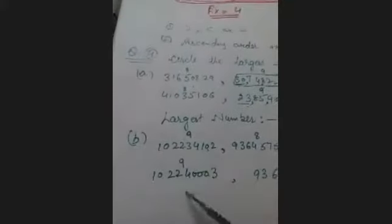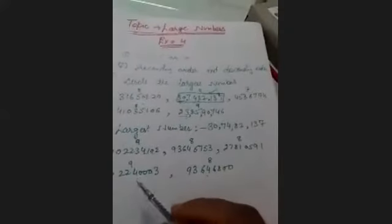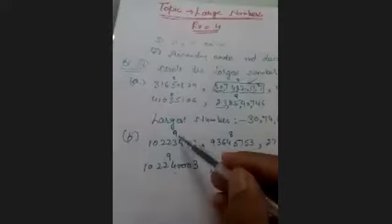Now we have two nine-digit numbers and three eight-digit numbers. The nine-digit numbers are the greatest among all five numbers. Now compare these two nine-digit numbers according to their place values.